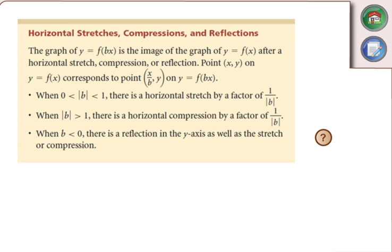Get rid of the word 'compression.' Note that when we put bx in the equation, we actually had a factor that was one over b — that's different from the vertical. Horizontal is slightly different, for the same reason that opposites occurred with translations.